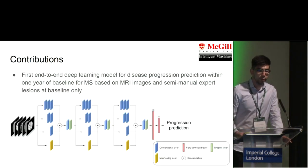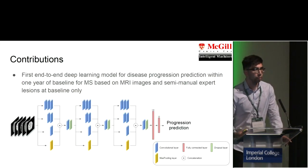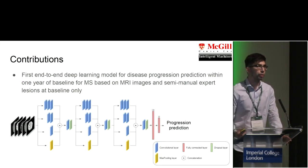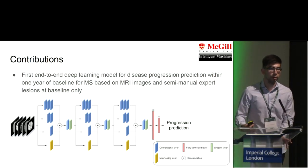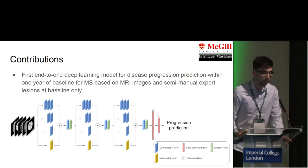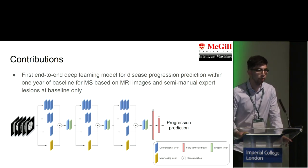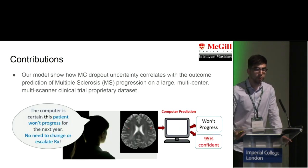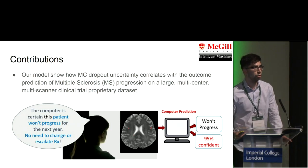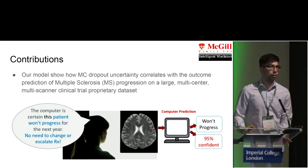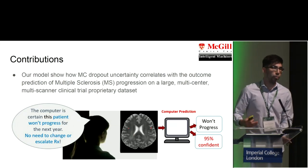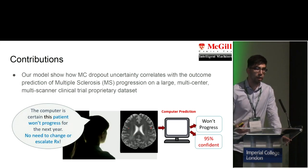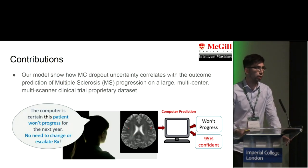In our paper we present the first end-to-end deep learning model able to predict disease progression within the year following the MRI scan, based on five MRI modalities and semi-manual lesion labels obtained by experts. We also derive an uncertainty metric based on Monte Carlo dropout sampling that allows us to tell how certain the model is in its prediction — a valuable tool for physicians, because it allows them to decide whether or not to rely on the model's prediction.